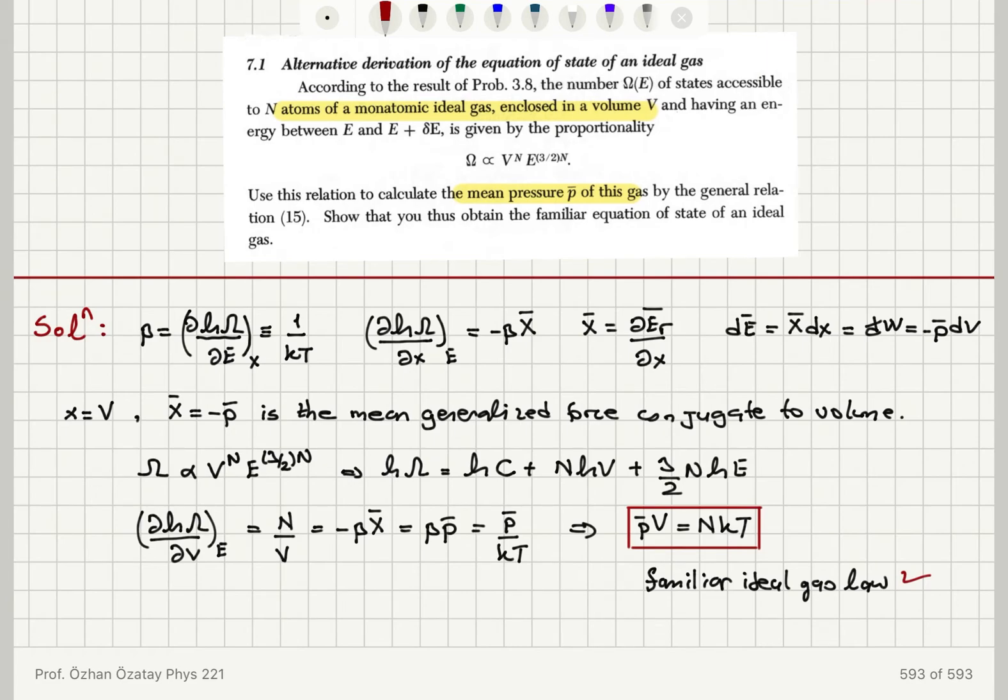So, we are looking at the number of accessible states for energies between E and E plus delta E for a monatomic ideal gas of N atoms enclosed in a volume V. So, when we take the natural logarithm and take a derivative with respect to volume,